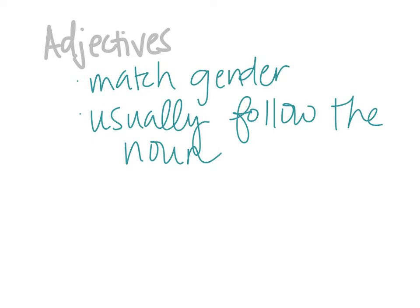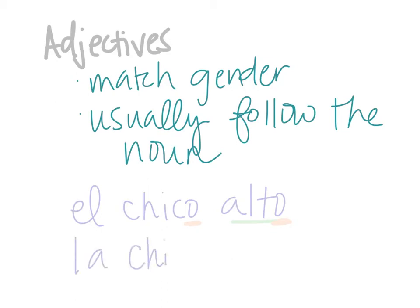So if I was talking about a tall guy, I would say el chico alto. Alto means tall, and it comes after chico. You notice it ends in an O because chico is masculine. Likewise, if I was saying the tall girl, I would say la chica alta. The adjective alta comes after the noun and ends in an A because it is feminine, just like the noun. Not every adjective is going to end in O or A, so let me teach you some of the extra rules.